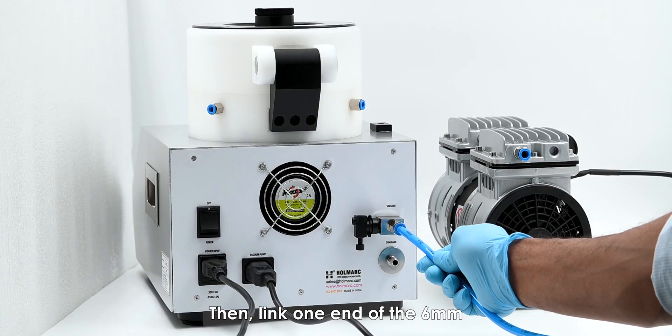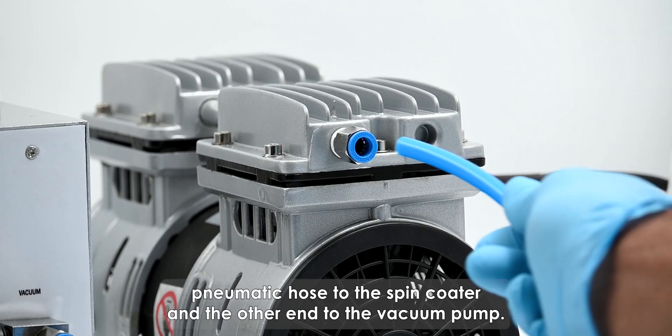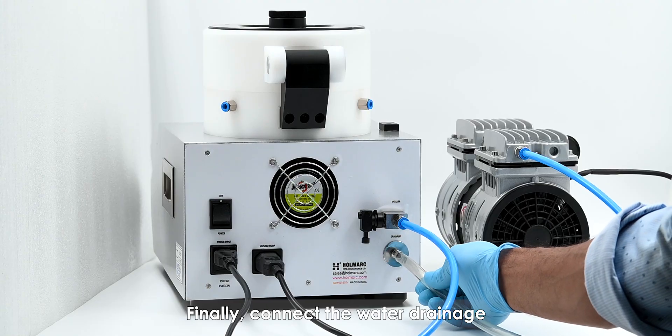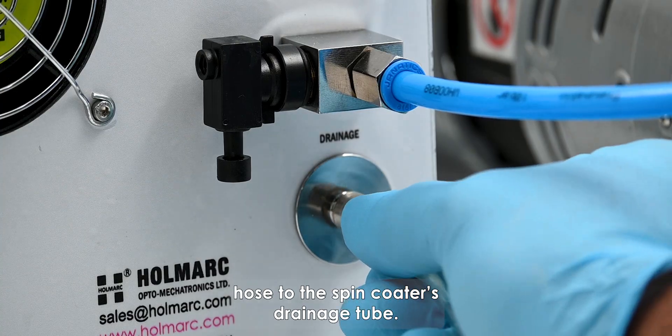Link one end of the six millimeter pneumatic hose to the spin coater and the other end to the vacuum pump. Finally, connect the water drainage hose to the spin coater's drainage tube.